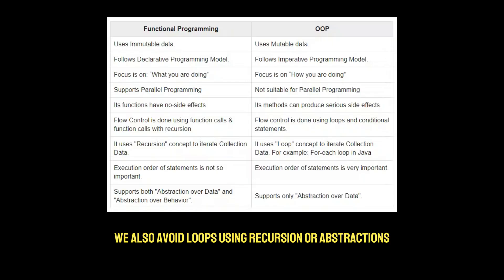In functional programming, we also avoid loops using recursion or abstractions. So instead of writing loops, functional programming uses recursion, for example, functions calling themselves, or tools like map and reduce.